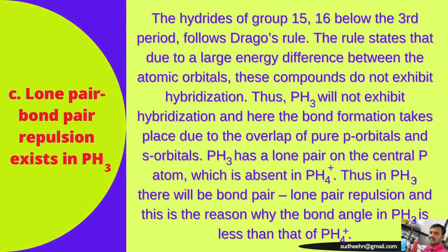According to Drago's rule, the hydrides of groups 15 and 16 below the third period do not exhibit hybridization due to a large energy difference between atomic orbitals. Bond formation in PH3 takes place due to overlap of pure p orbitals and s orbitals. PH3 has a lone pair on the central P atom which is absent in phosphonium, causing lone pair–bond pair repulsion, which is why the bond angle in phosphorus hydride is less than that of phosphonium.